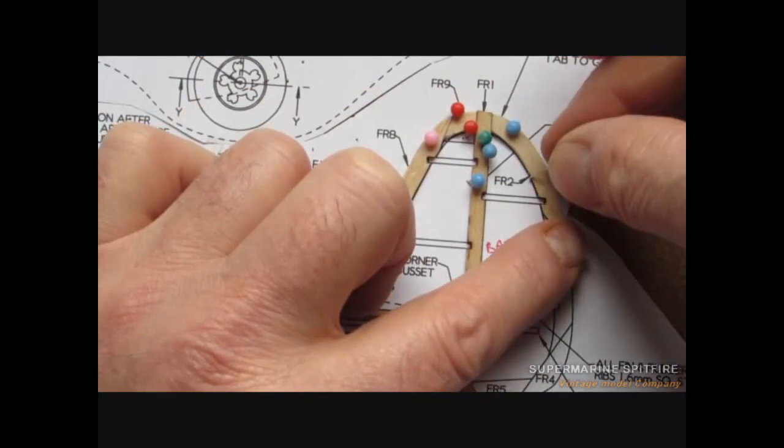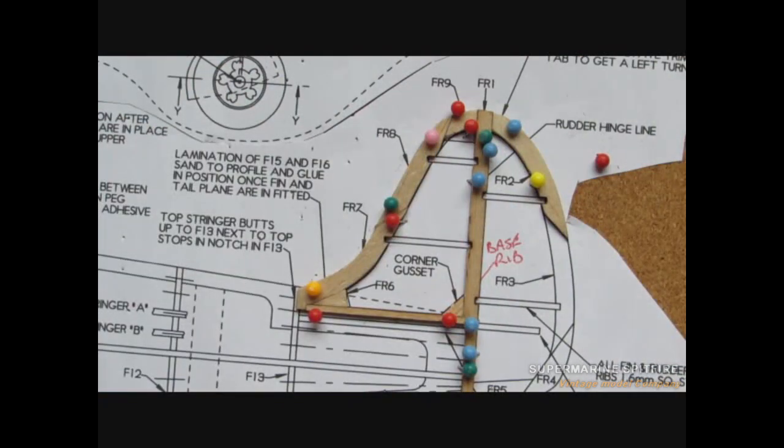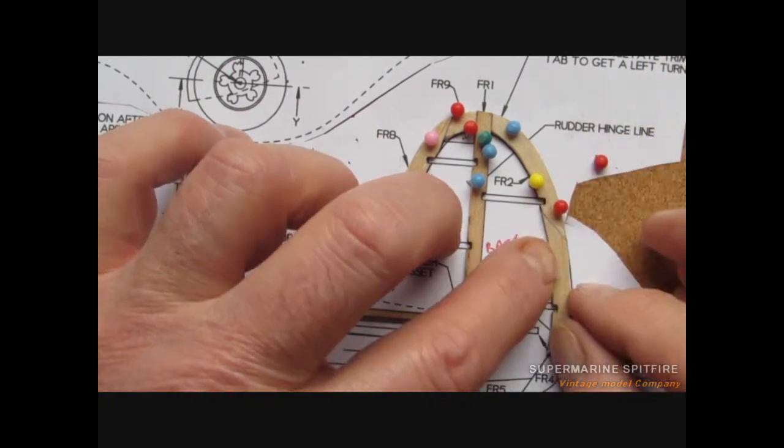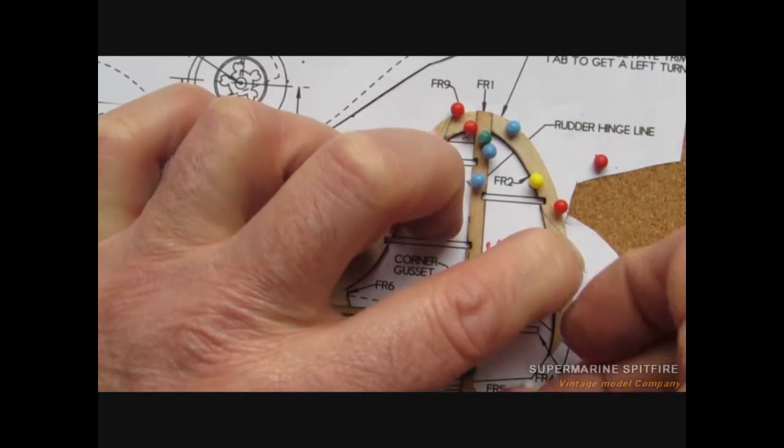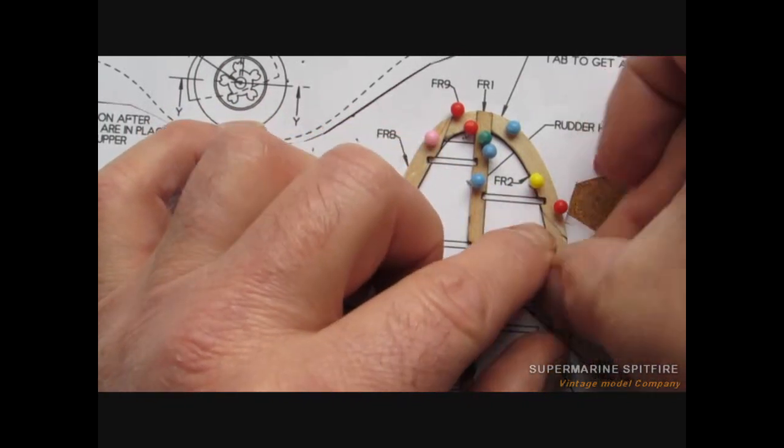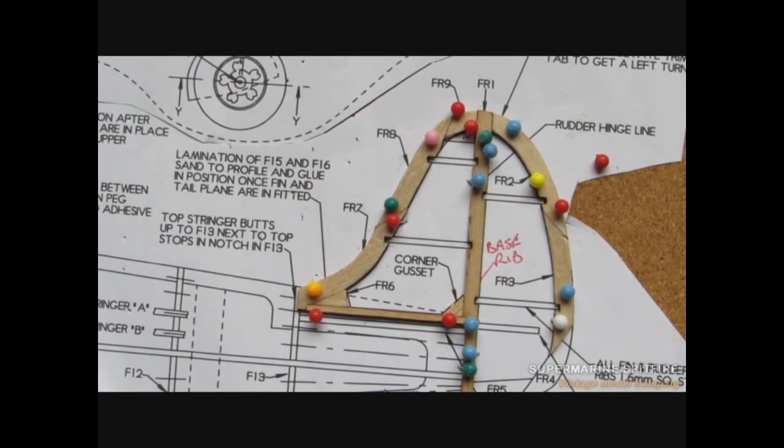And then just continue on with the back edge. I don't think there is any real reference as to which way round you place these pieces, to be honest. That is just the way I have done it. Just follow the pattern as close as you can.